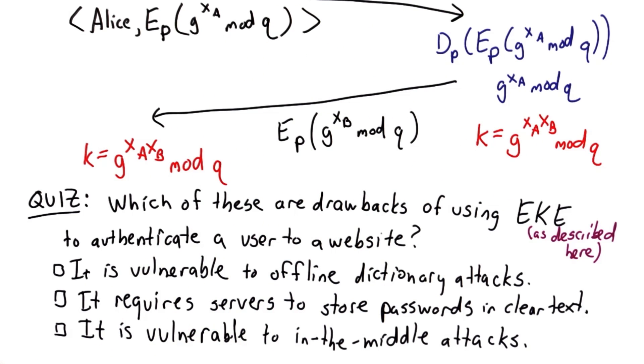The first possibility is that it's vulnerable to offline dictionary attacks. This is where an attacker goes through a dictionary of common passwords, trying to guess the password of a user. The second choice is that it requires servers to store the passwords in clear text. And as we discussed in Unit 2, this is never a good idea. The third choice is it's vulnerable to man-in-the-middle attacks, just like the Diffie-Hellman protocol was.